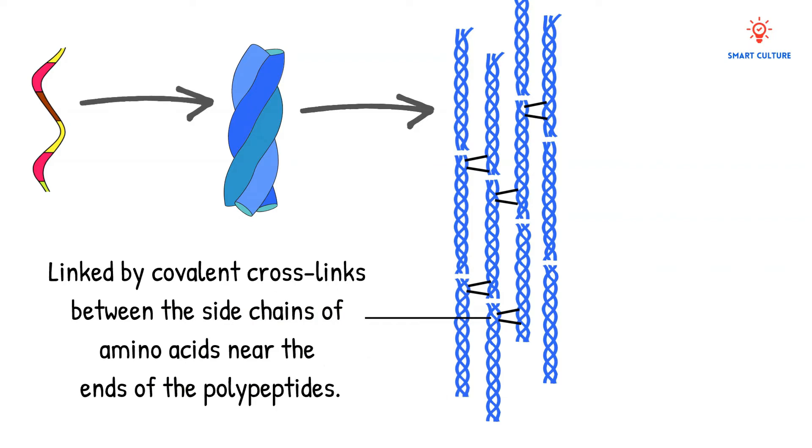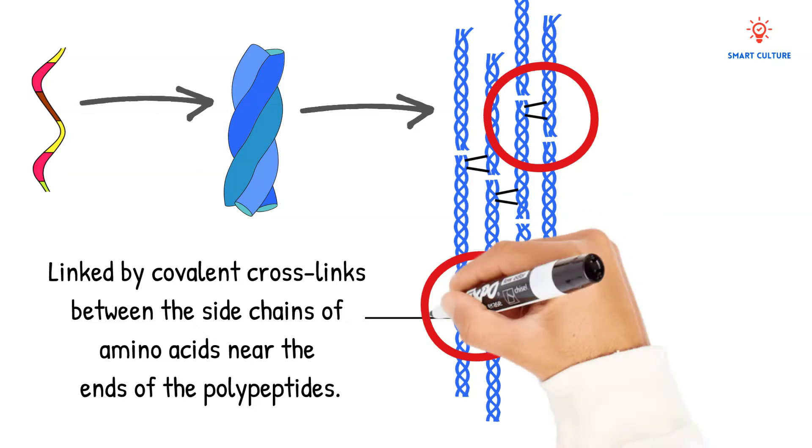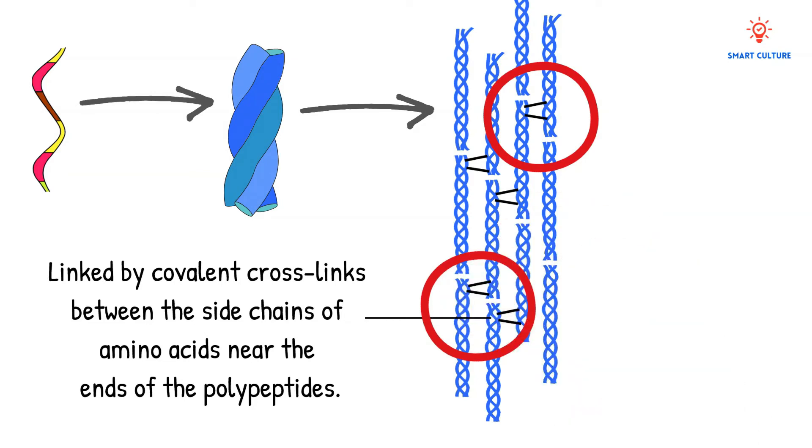You'll see that the points where one collagen molecule ends and the next begins are spread throughout the fiber rather than all being in the same position along the fiber. So the fact that these cross links are not lined up gives collagen greater strength.